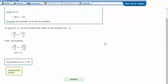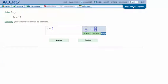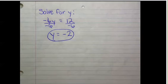Let's try another one. Solve for Y. Negative 6Y equals 12. Here are my notes. Solve for Y. Negative 6Y equals 12.